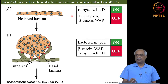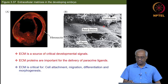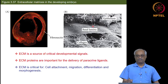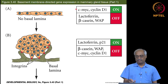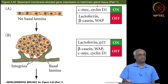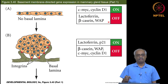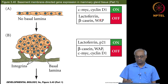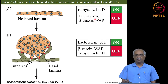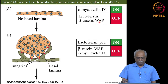Without basal lamina — which is the ECM formed of laminin secreted by epithelium — the cells just grow in a sheet and will continuously produce proteins involved in cell proliferation like c-myc and cyclin D1, while the differentiated products like casein and whey protein will not be produced. These are all products of a differentiated mammary gland.